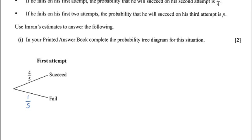If he fails on his first attempt, then he has a second go. And the probability that he succeeds on his second attempt is 3/4. So the probability that he fails on his second attempt must be 1/4.